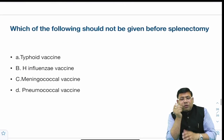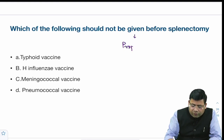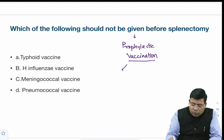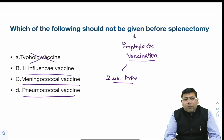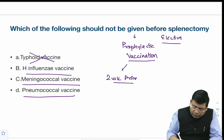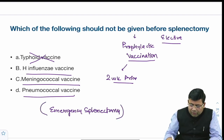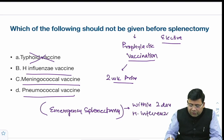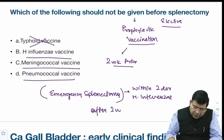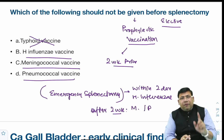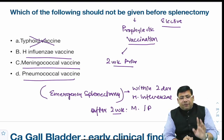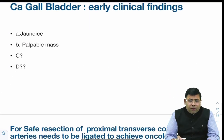There was a question on which vaccine should NOT be given before splenectomy. Before elective splenectomy, three vaccines are given two weeks prior: H. influenzae, meningococcal, and pneumococcal. Typhoid vaccine has no role. For emergency splenectomy, H. influenzae is given within two days, and meningococcal and pneumococcal are given two weeks after surgery.